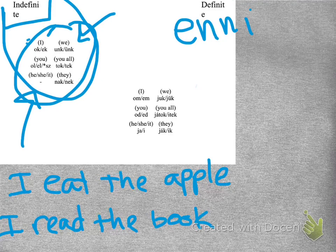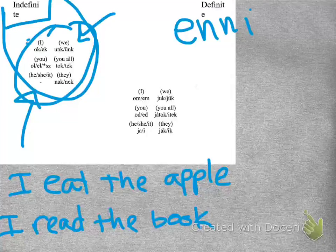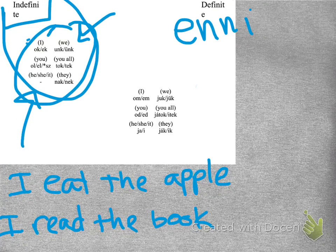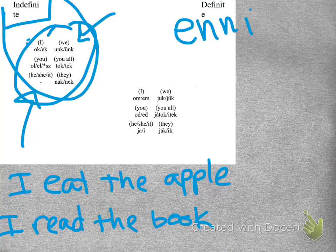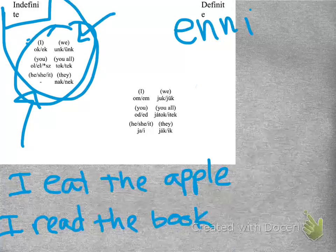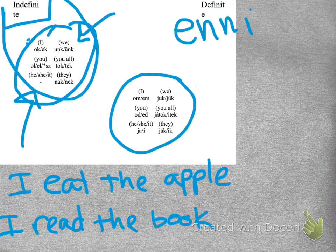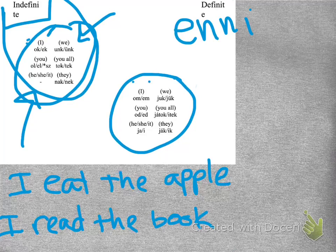So, we'll start with, I eat the apple. So, the word for, to eat, is enni. This is one of those irregular verbs, so when you conjugate it, it kind of does something weird. There's a list of those, on the internet, or in most Hungarian grammar books. So, I eat, so,